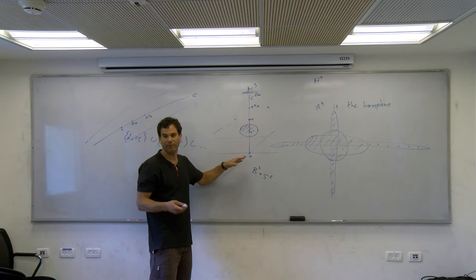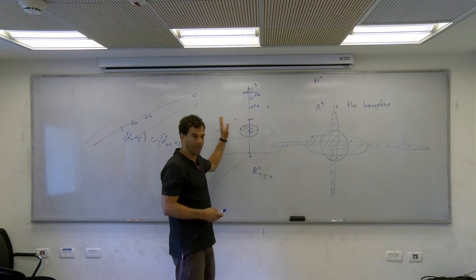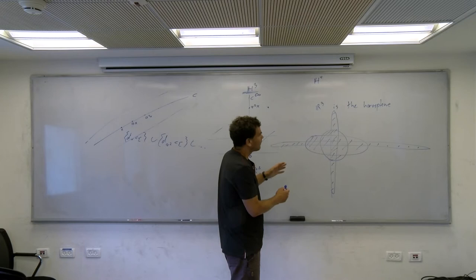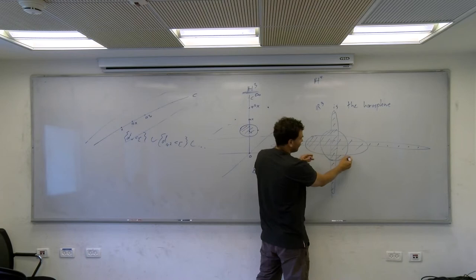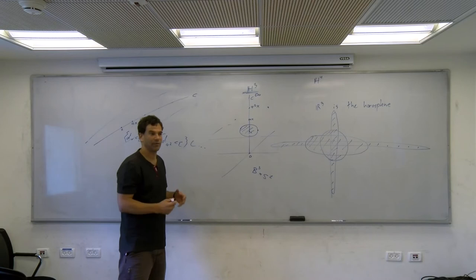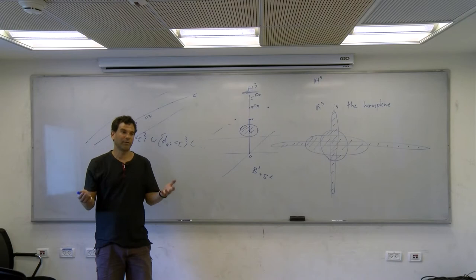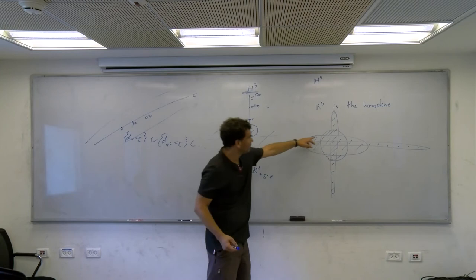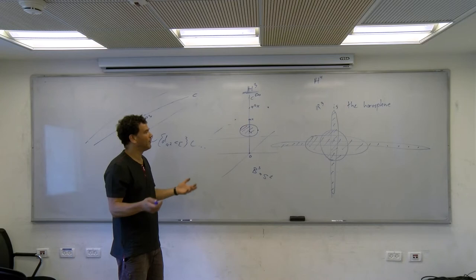The boundary of the thick-thin decomposition is topologically very nice but geometrically not so nice. It's a finite union, and the fact that ellipsoids share the same axis means the angles are always at least pi over two — so it's not too complicated. But the thick part is not a manifold with smooth boundary; it's a manifold with corners, which is what corresponds to corners in the thick-thin decomposition.